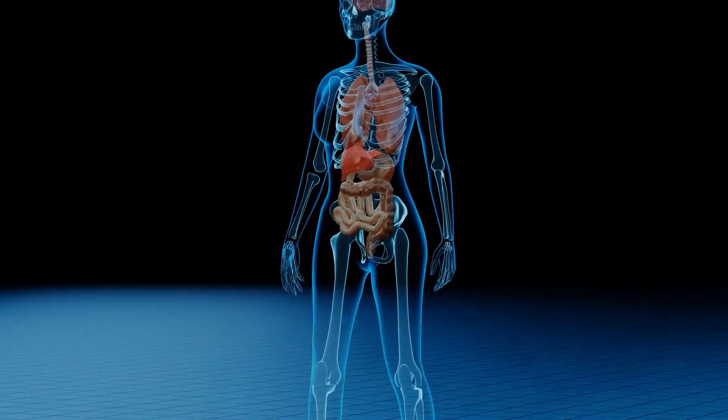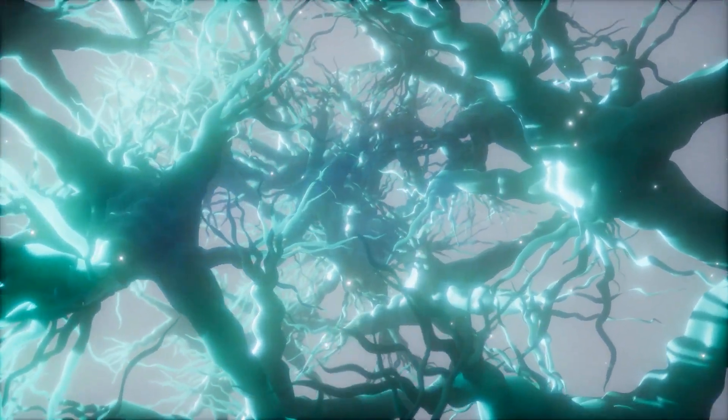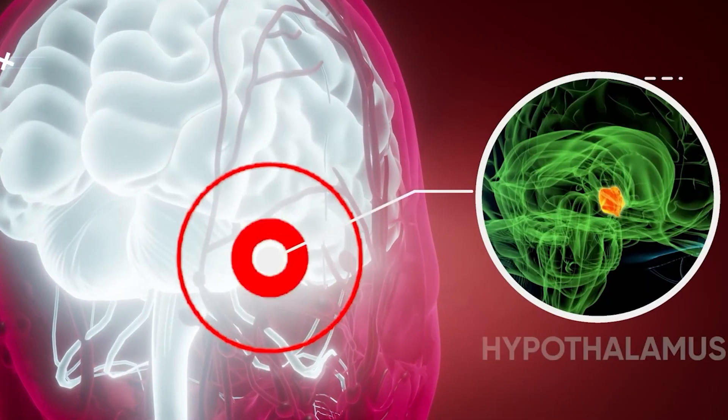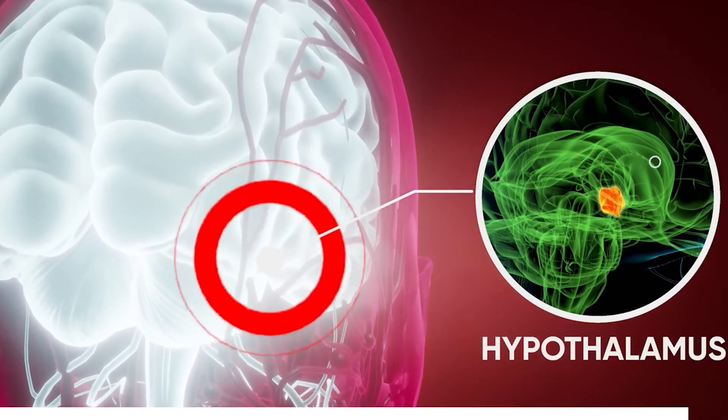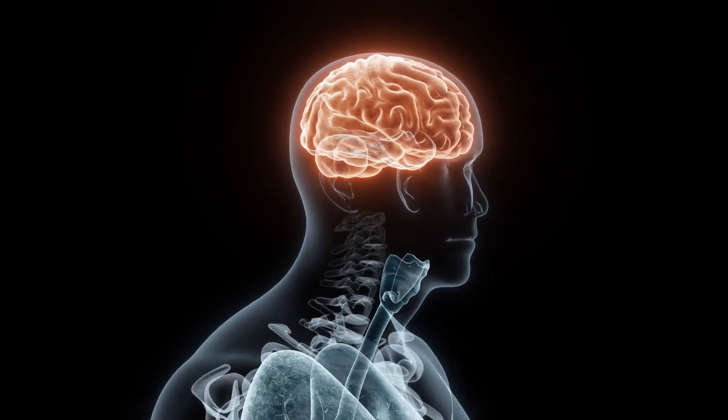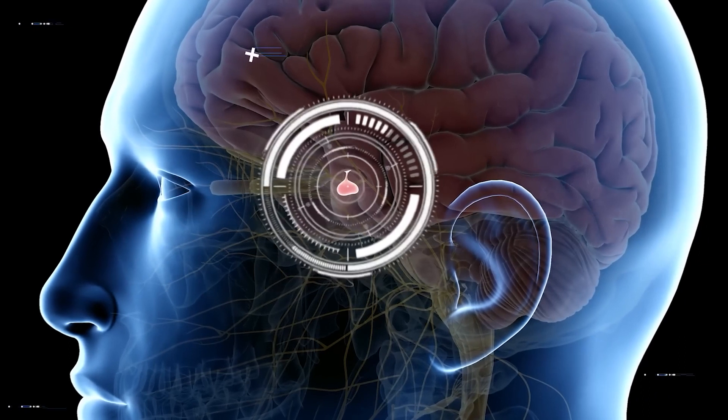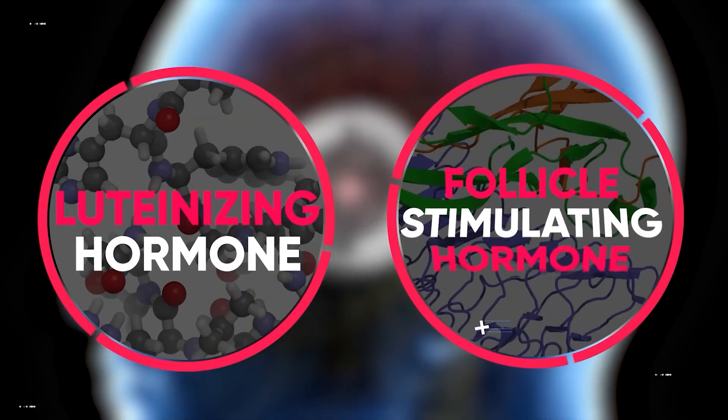To further comprehend what testosterone works inside your body, we must first examine how it is produced. Producing testosterone begins in the hypothalamus, the portion of your brain that serves as the master regulator of your hormones. The hypothalamus secretes gonadotropin-releasing hormone (GnRH), which stimulates the pituitary gland to secrete luteinizing and follicle-stimulating hormones.